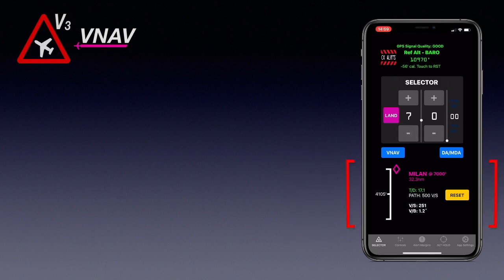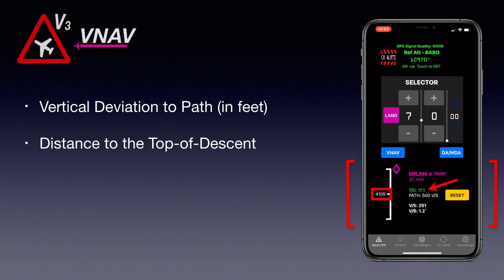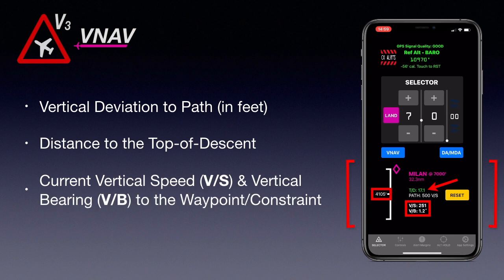VNAV has calculated the path needed to arrive at 7,000 feet over Mylan, including the vertical difference between you and the VNAV path, the distance to the top of descent, and the current vertical speed and vertical bearing to the waypoint altitude constraint. This is just a small taste of what VNAV can do.